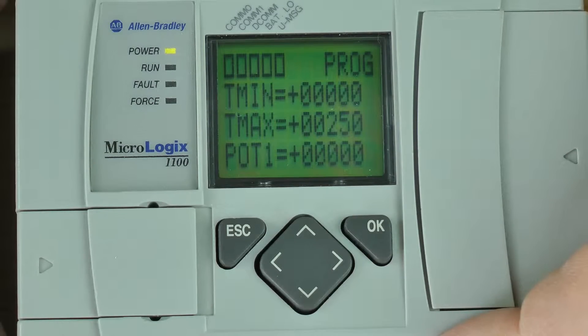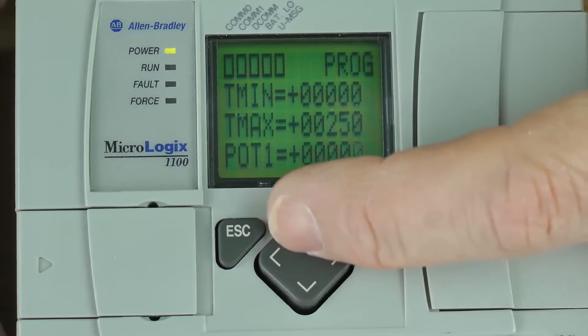Now here you can see trim pot one's minimum is zero, its max is 250, and pot one's value is zero. So let me hold down the up arrow button and change the value.